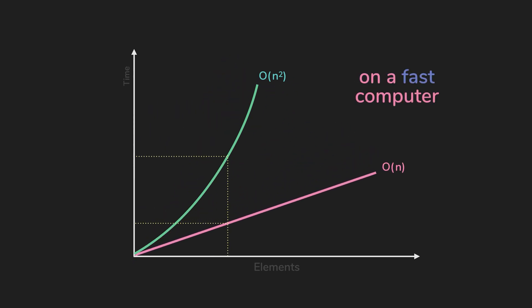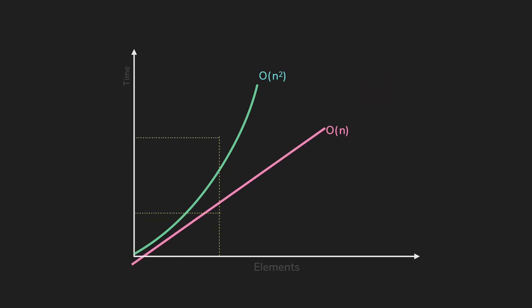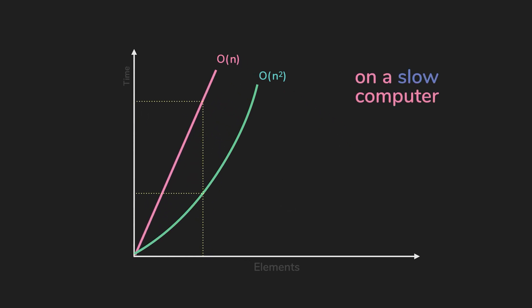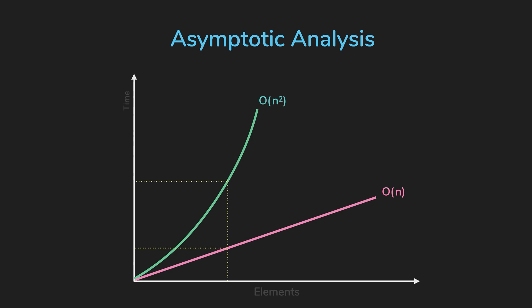When you're trying to say that this algorithm is more efficient than the other, the runtime shouldn't change depending on external factors like computing power. So we need a generalized way of expressing how fast an algorithm is, which is where asymptotic analysis comes in.